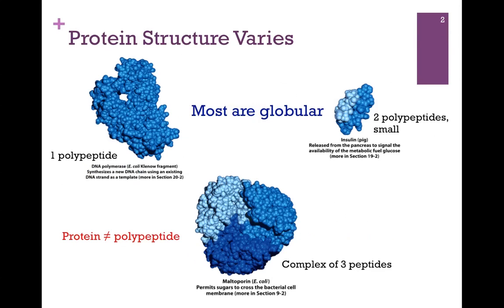Let's first clarify what we mean by a protein. Illustrated here on the screen is a figure from your book showing three proteins in space-filling model. On the upper left, we have a fragment of DNA polymerase. On the right, we have insulin, and on the bottom, we have maltoporin. As you can see, most proteins are globular in their general structure.